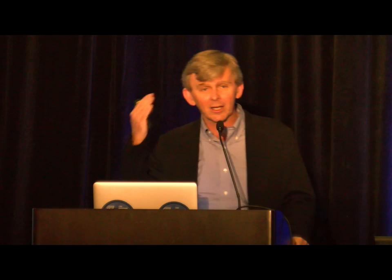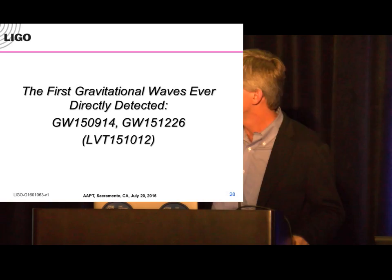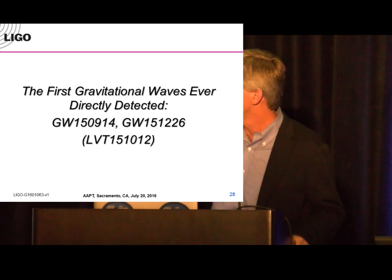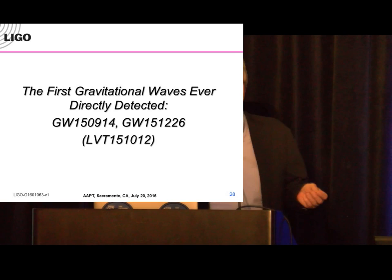Another point: the frequency band we're sensitive to coincides with audio frequencies — roughly 20 hertz to 20 kilohertz. So these gravitational waves, even though they're not sound, can be represented as sound. And that brings us to the payoff of all this hard work: the first gravitational wave event. We built Advanced LIGO — a second-generation machine — to be about 10 times more sensitive than initial LIGO.